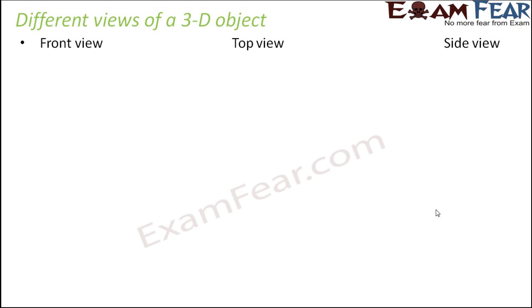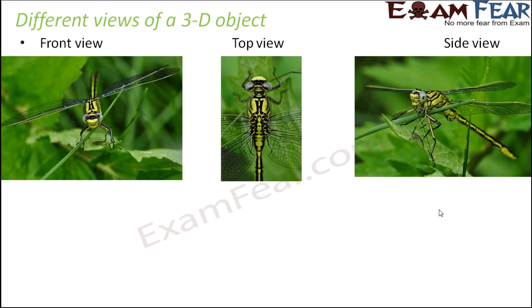An interesting thing about a three-dimensional object is that when you look at the same object from different views, you see it differently. Let's take the example of this insect. Looking at the front view, the insect appears somewhat like this. In all three pictures, are we seeing the same insect? Yes, we are — but it does not appear exactly similar in all three views.